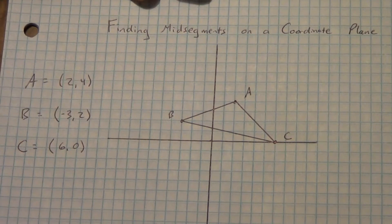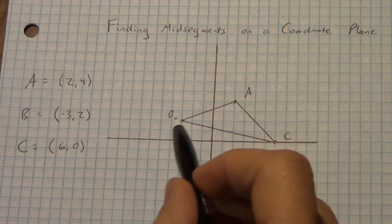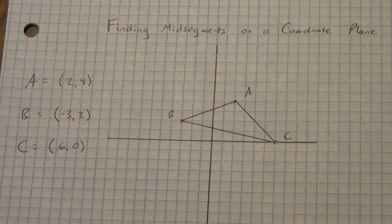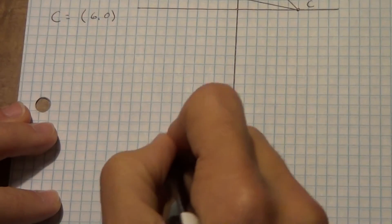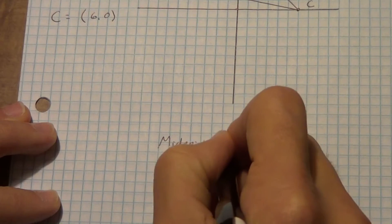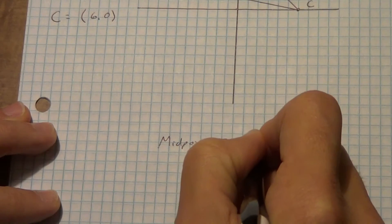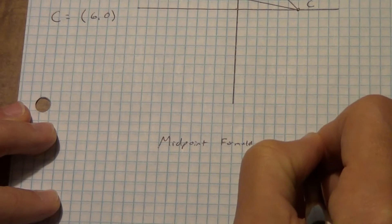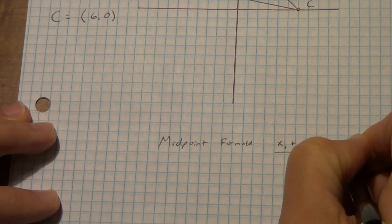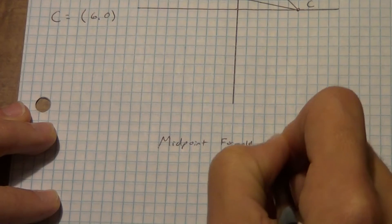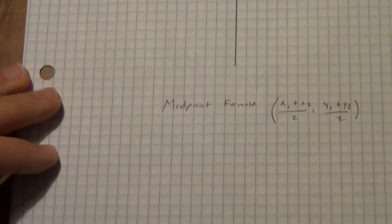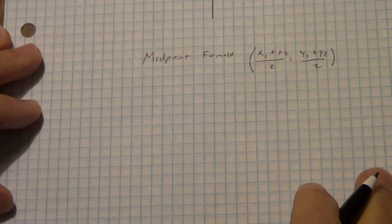Now we're going to find the midpoints. Our midpoint formula says: (x₁ plus x₂ over 2, comma y₁ plus y₂ over 2). We're going to do this for each of the three sides we're dealing with.